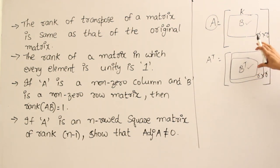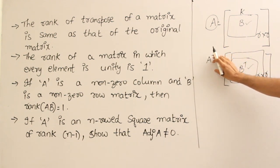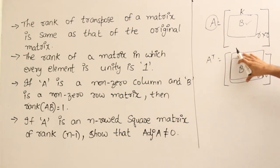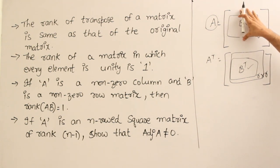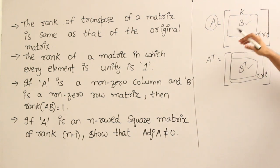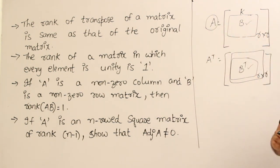R. If there exists any bigger sub-matrix in A transpose then that would have existed already in A which means the rank of A itself would have been greater than R which is not possible. Therefore, A and A transpose will have the same determinant.